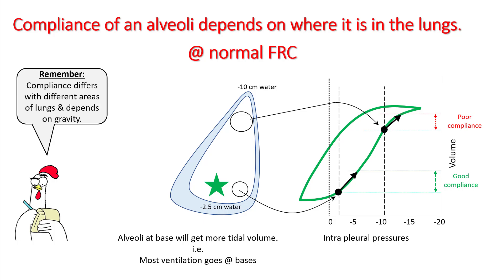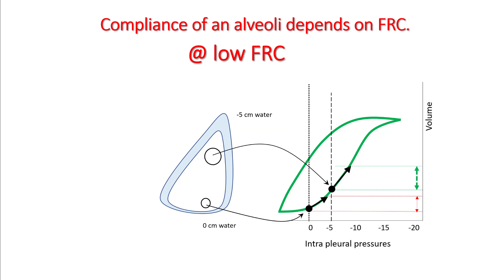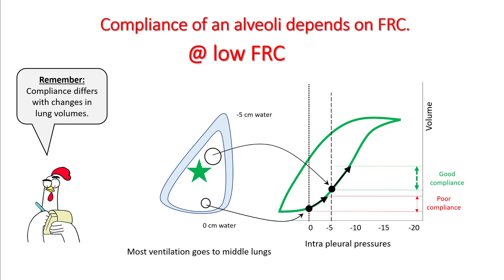Compliance therefore differs with different areas of the lungs and depends on gravity. Compliance of an alveolus also depends on its FRC. If you are breathing at a low FRC, pressures shift to 0 and −5 instead of −2.5 and −10, so alveoli at the bases are in a more compromised zone with more atelectasis and the lungs are much stiffer compared to alveoli at higher positions.